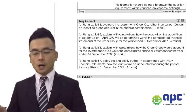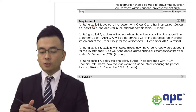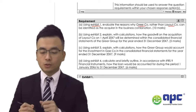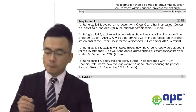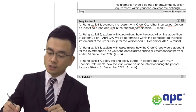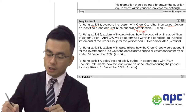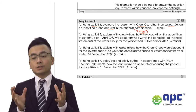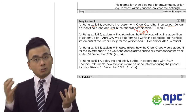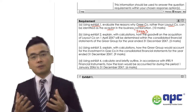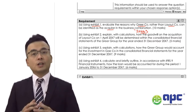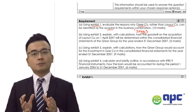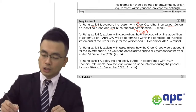Let's see requirement Part A. We are required to use the Exhibit 1 information and evaluate the reasons why the company called G-Complete, rather than the layout company, can be identified as the acquirer in the business combination. This is according to IFRS 3, which provides clear guidance on how to identify the acquirer and the acquiree.